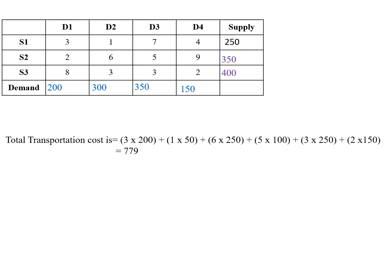Now we write the transportation matrix along with all allocations: 200, 50, 250, 100, 250, and 150. The total transportation cost is: (3 × 200) + (1 × 50) + (6 × 250) + (5 × 100) + (3 × 250) + (2 × 150), which gives a total cost of 3,700. Thank you.